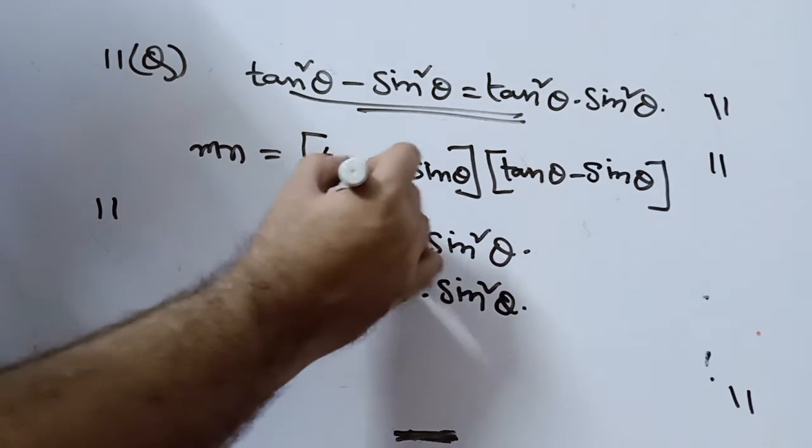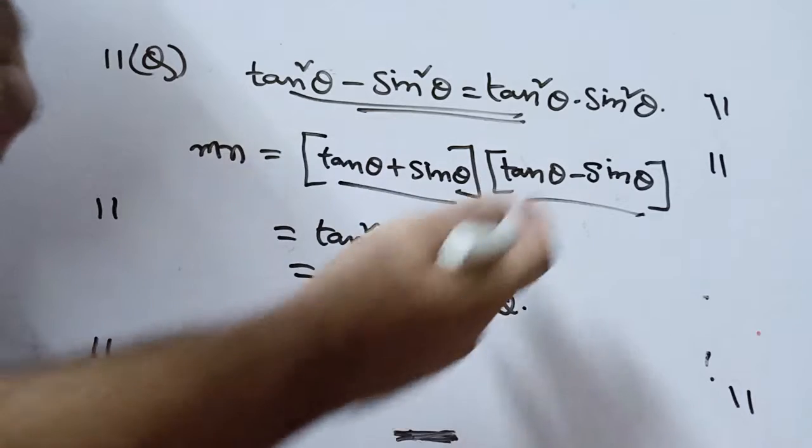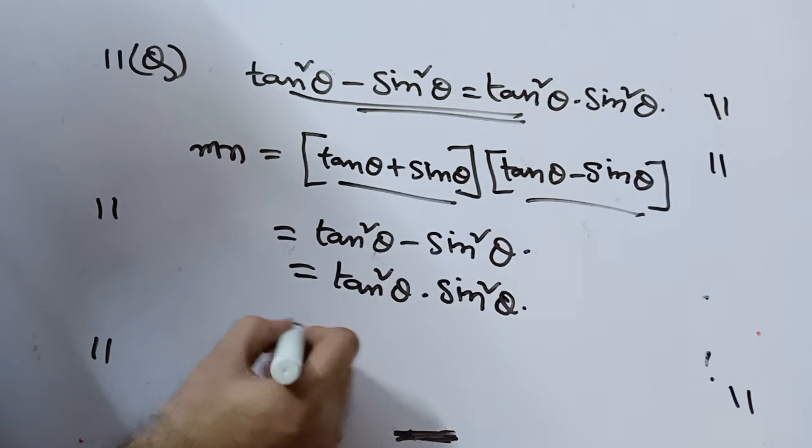But we know very well from this relationship that it is nothing but tan square theta into sin square theta. This is of the form a plus b into a minus b equals a square minus b square.